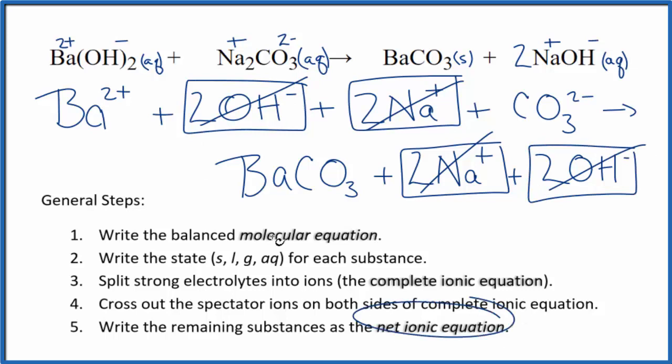is the net ionic equation for Ba(OH)2 plus Na2CO3. I'll clean this up and write the states. We'll have our net ionic equation.